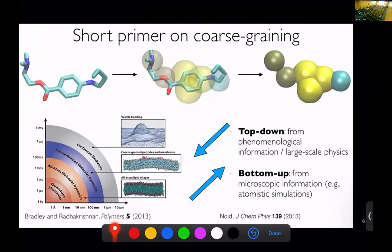Jenny already gave a primer on parametrizing these coarse-grained models. I'm going to be talking about models that have this type of resolution, so you can think of these beads as functional groups. There are two main ways of parametrizing coarse-grained models: one is top-down and one is bottom-up.